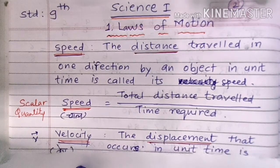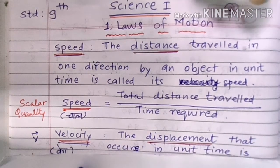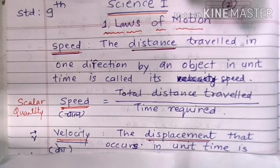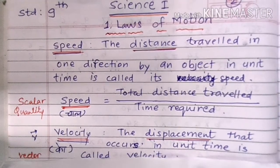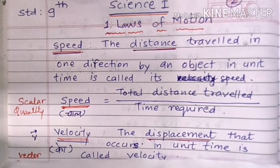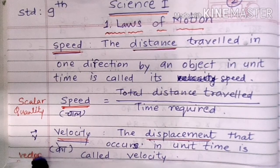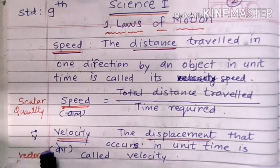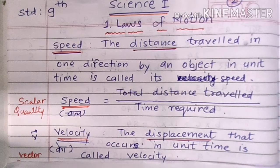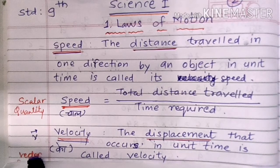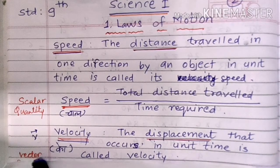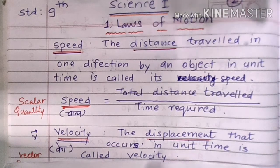The next one is velocity. What is velocity? The displacement that occurs in unit time is called velocity. Velocity is denoted by V. Velocity is a vector quantity — it has magnitude as well as direction, and hence it is a vector quantity. It is displacement upon time.